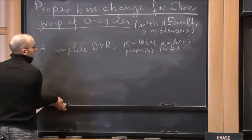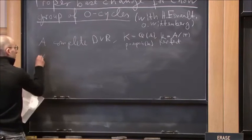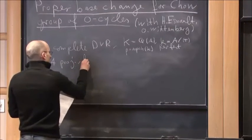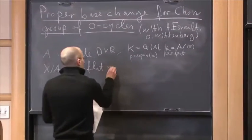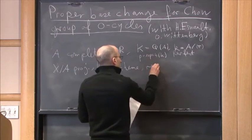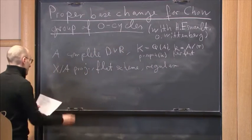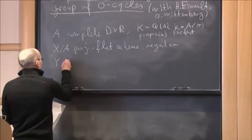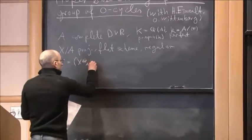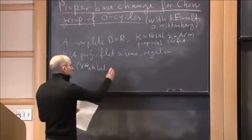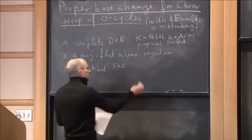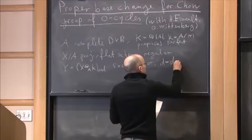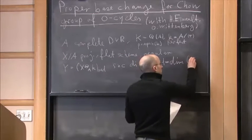We want to consider geometry for schemes over A. In this talk, X over A will always be a projective flat scheme, and we assume that the scheme is regular. By Y, I will always denote the reduced special fiber of X, so Y is X tensor k, reduced. We always assume that this is a simple normal crossing divisor inside X. By d, we denote the fiber dimension, so the dimension of Y.